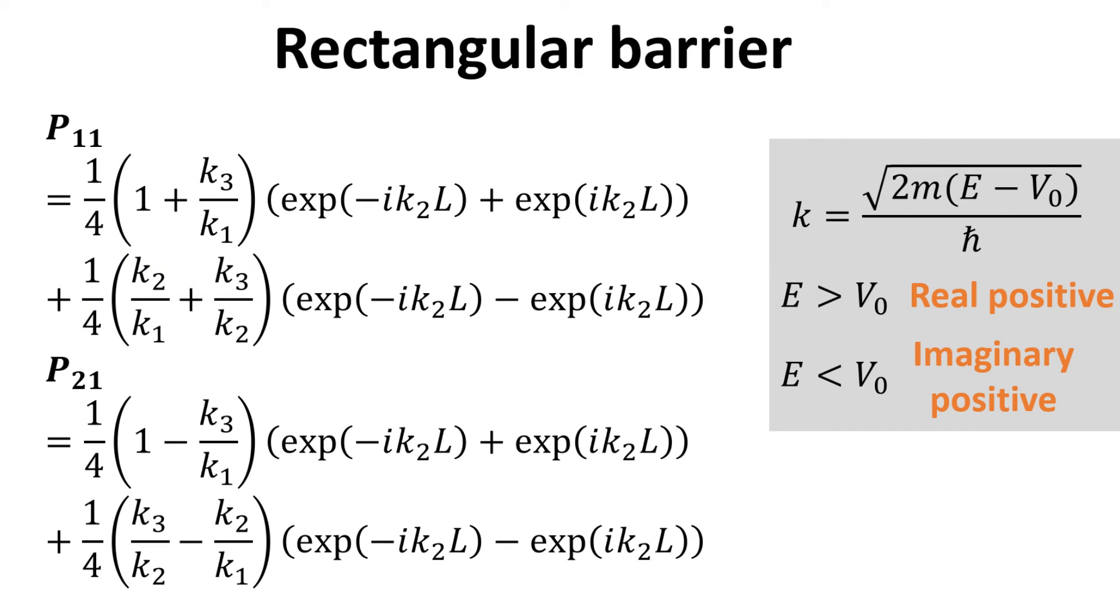For your reference, I show here the explicit expressions for P11 and P21. We remind you that the wave vectors K can either be real or imaginary, depending on whether the electron energy is above or below the barrier as we previously discussed.